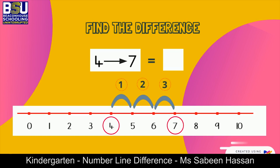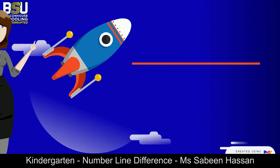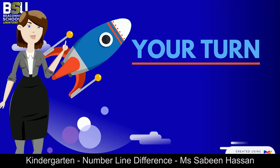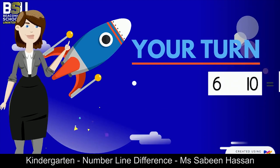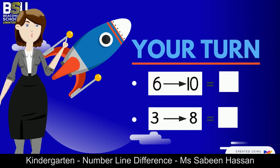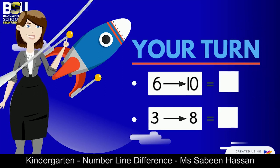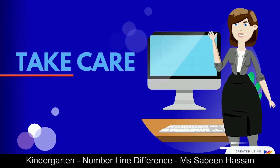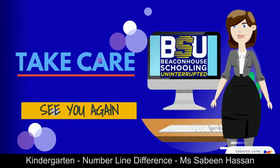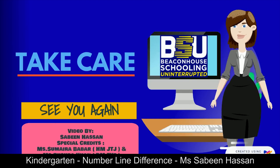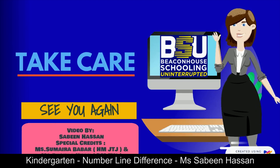So it means that the difference between numbers four and seven is three. Come on everyone, now it's your turn — solve your questions and share your answers with your parents. That's all for today from BSU. Take very good care of yourself, see you all again, bye!